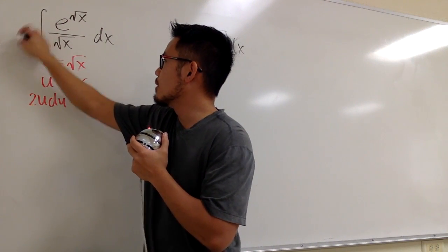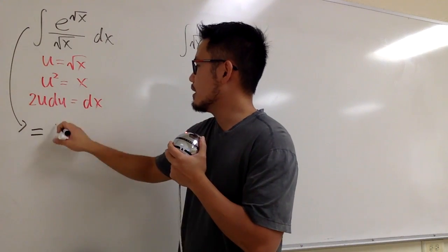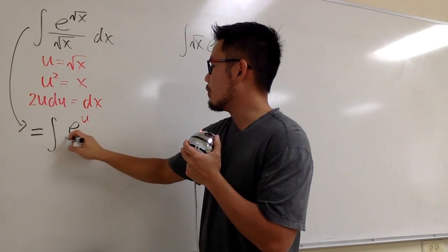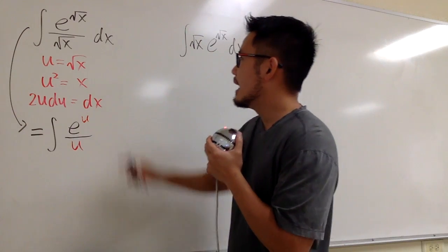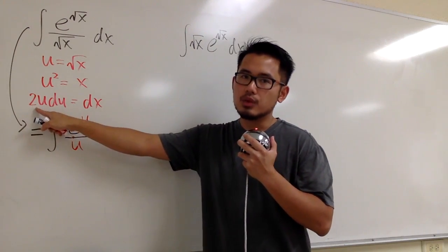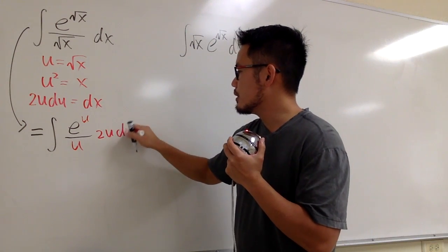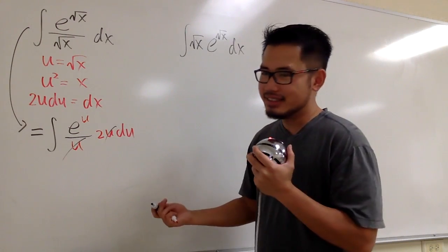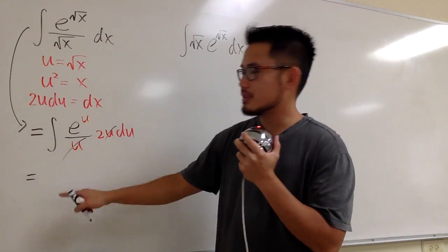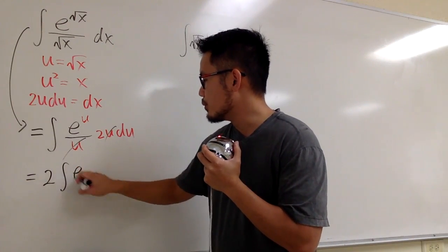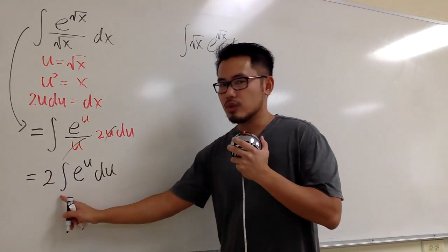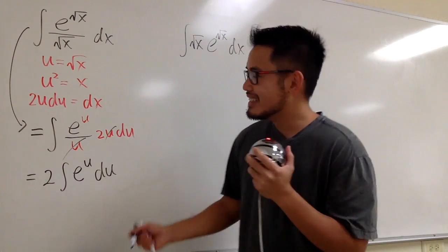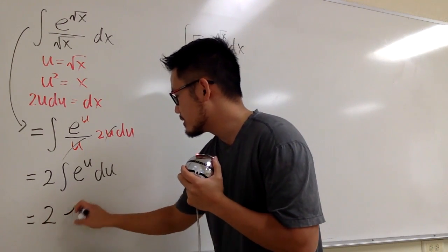Now we take this integral into the u world. This is the integral of e to the square root of x, which is e to the u, over square root of x, which is also u. And dx is the same as 2u du, so we multiply by 2u du. You see that u in the denominator and the u from dx cancel each other nicely. We get 2 times the integral of e to the u du, and the integral of e to the u is just e to the u. Therefore we get 2e to the u.